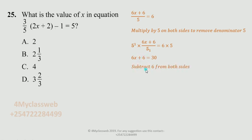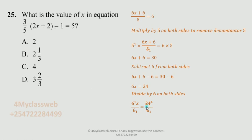The next step is to remove the plus 6 by subtracting 6 from both sides. So 6x plus 6 minus 6 gives 0 on that part, leaving 6x equal to 30 minus 6, which is 24. Since this is 6 times x equals 24, I divide both sides by 6: 6 divided by 6 gives 1, so on the left I am left with x, and on the right 24 divided by 6 gives 4.